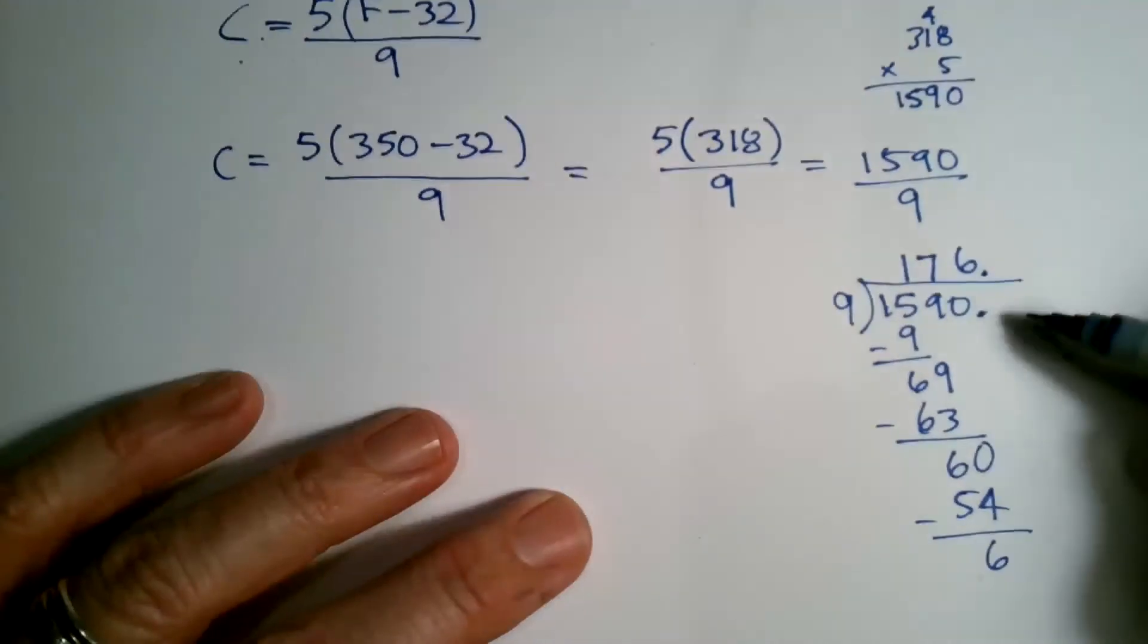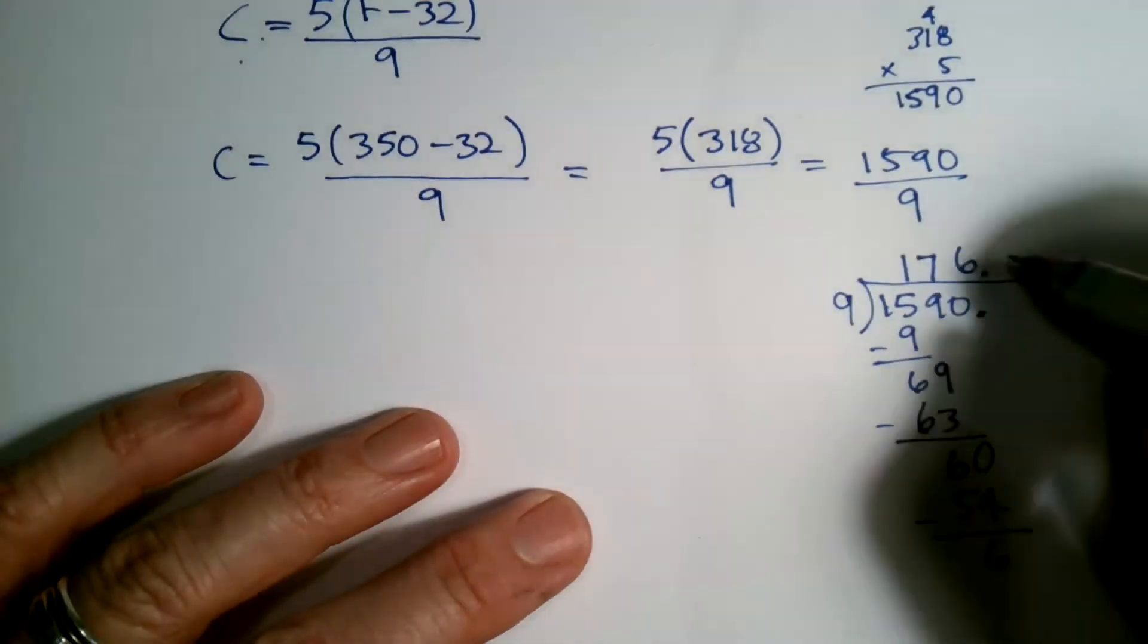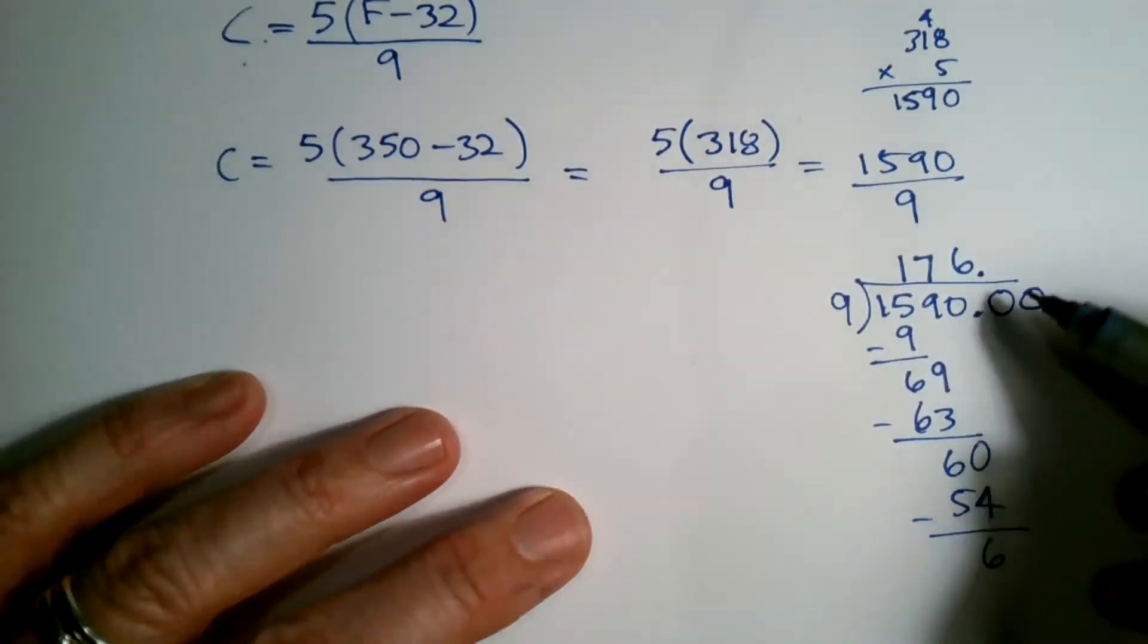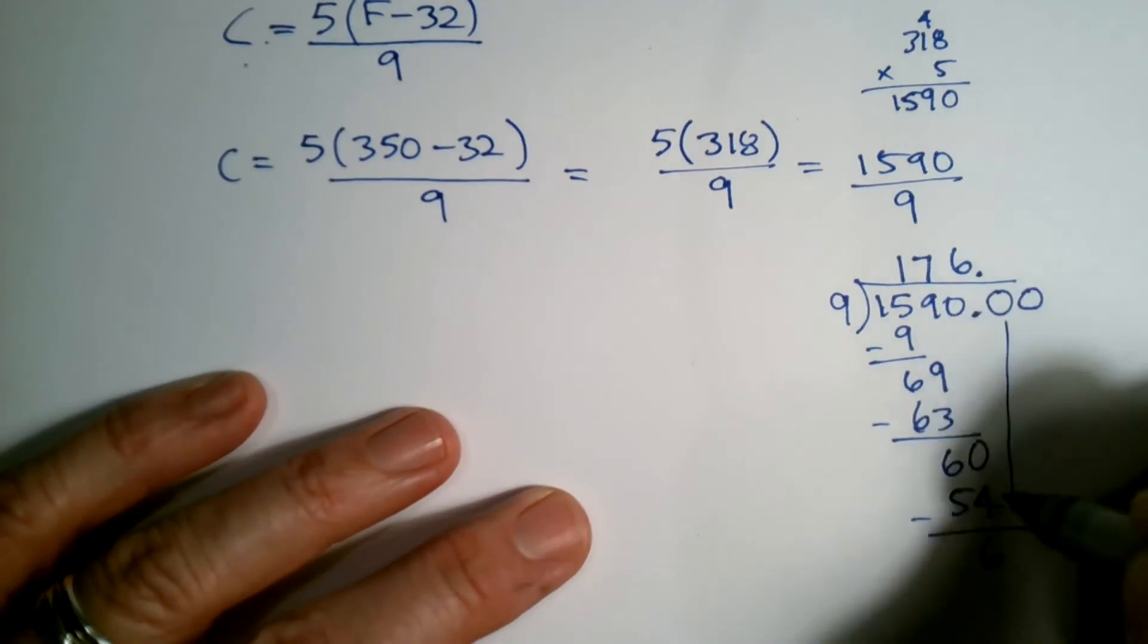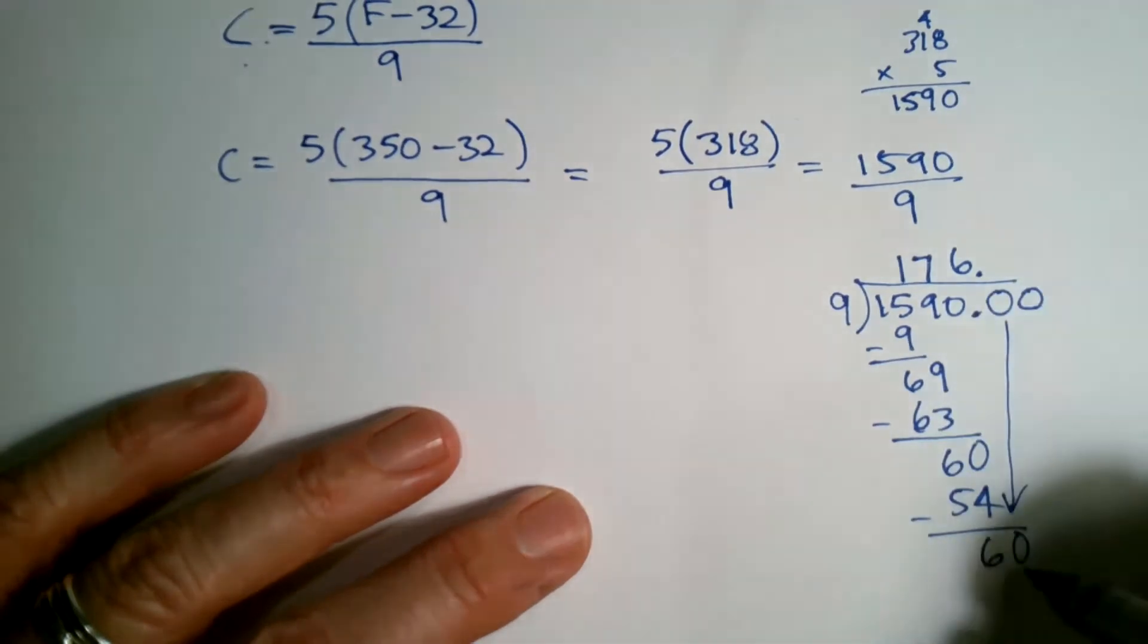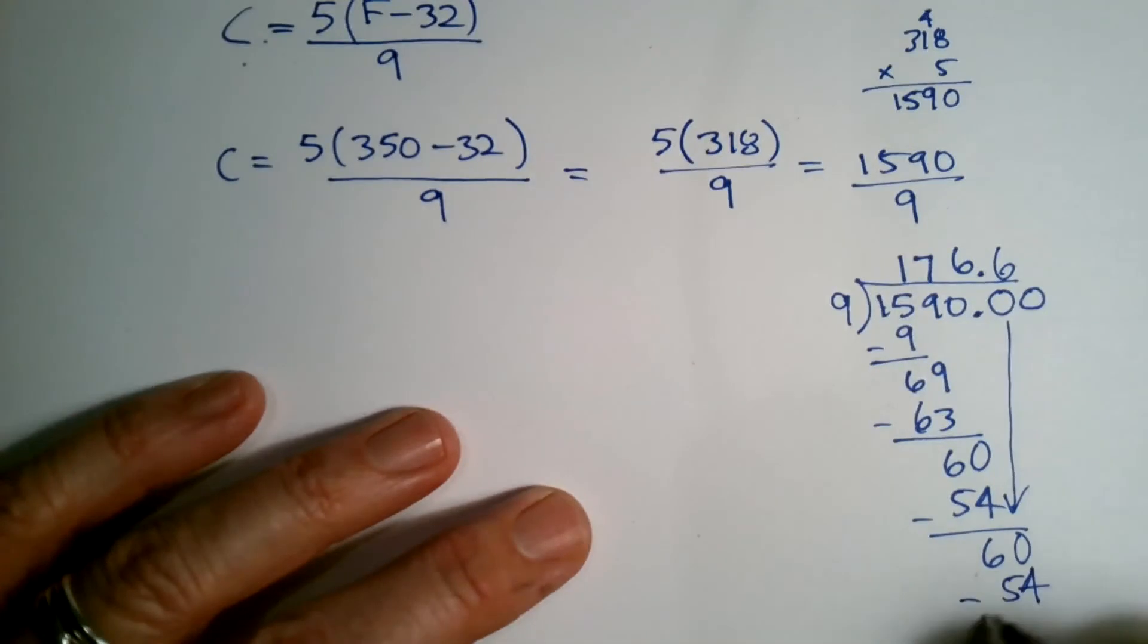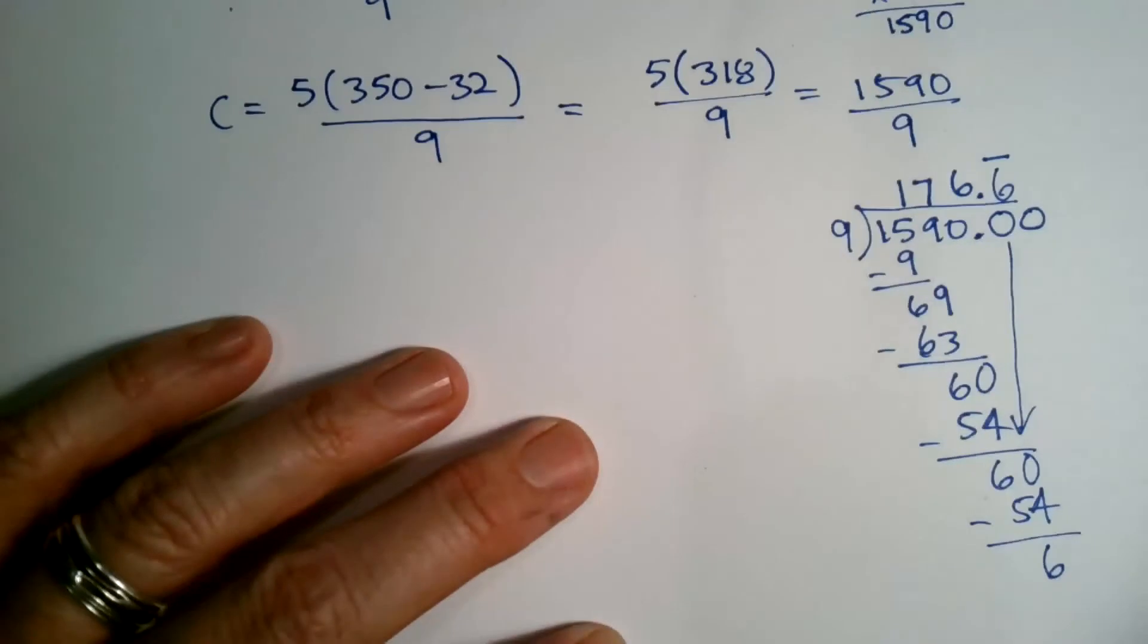And then now this is where I need to add a decimal. Need to add a decimal into the division problem and add some zeros to see where we're headed. So I bring down that 0 there. 9 into 60 again, it's going to be a 6. And it looks like I'm going to keep having this remainder 6. So I have a repeating 6 tenths.